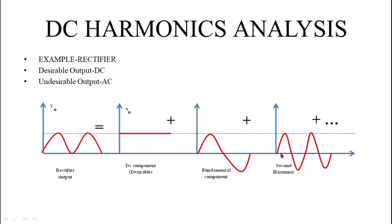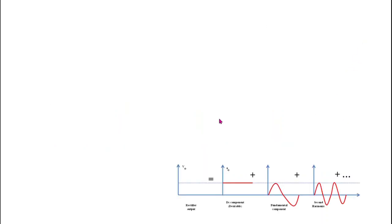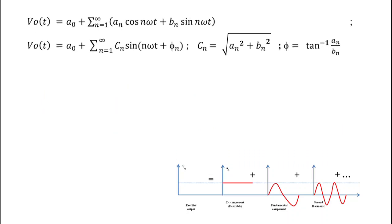Since the output of a rectifier is DC, only the DC component is desirable while all other components are undesirable. We can write the output voltage of the rectifier as a Fourier series expression: v₀(t) = a₀ + Σ(n=1 to ∞) [aₙ cos(nωt) + bₙ sin(nωt)]. This can also be written as v₀ = a₀ + Σ(n=1 to ∞) cₙ sin(nωt + φₙ).